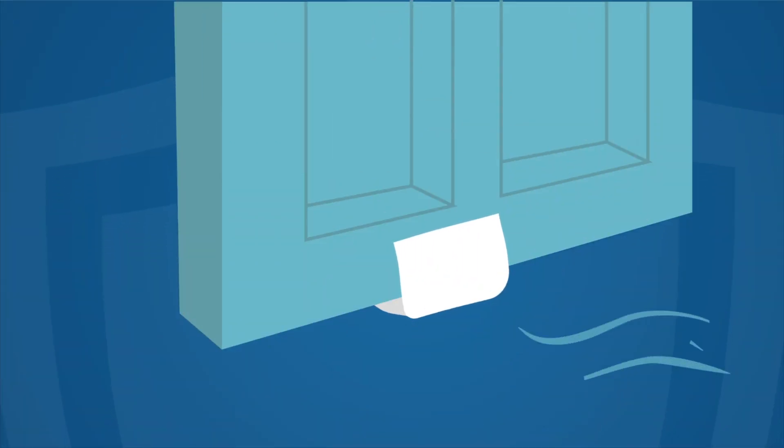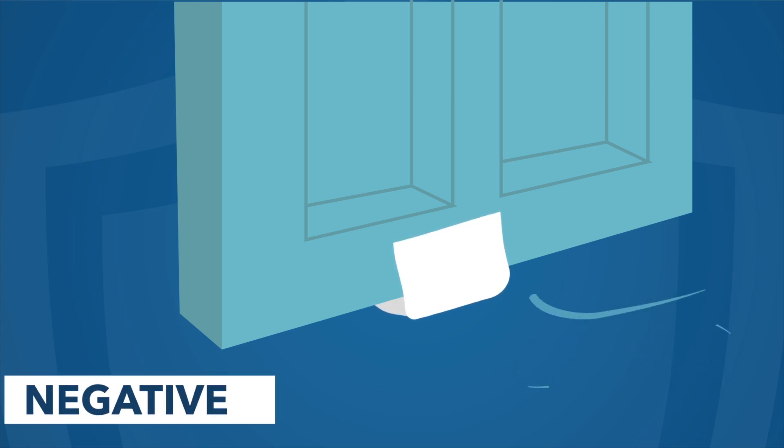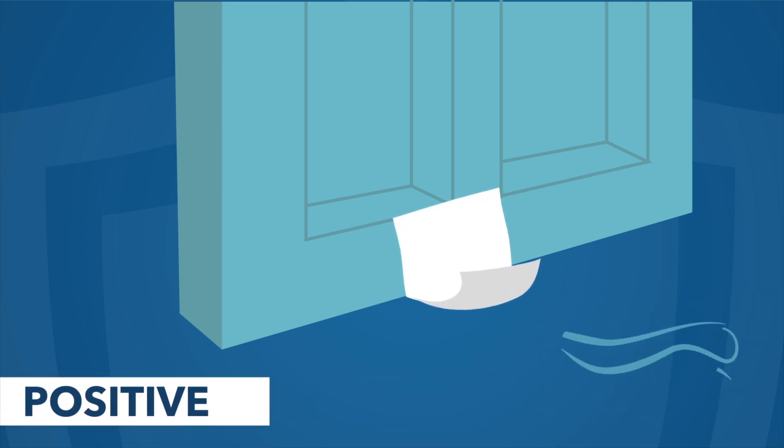If you are concerned about a room's pressure, you can quickly check to see if a room is positive or negative pressure by holding a single ply tissue or piece of toilet paper at the bottom of the closed door. If the paper is sucking in, the room is negative. If the paper is blowing out, the room is positive.